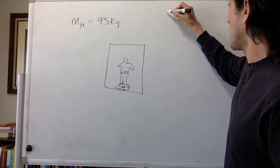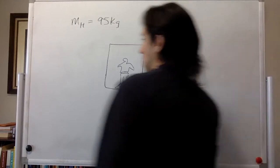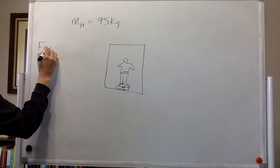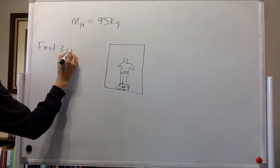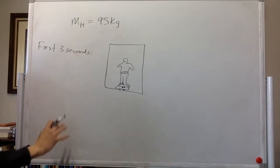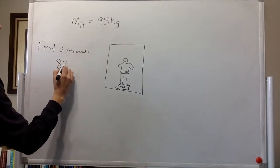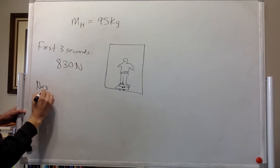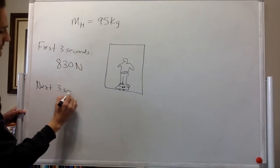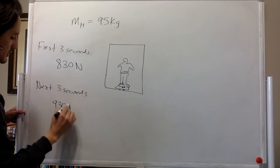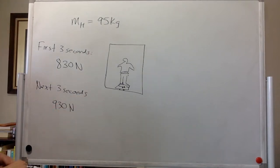For the first three seconds, the scale reads 830 newtons. For the next three seconds, it reads 930 newtons.